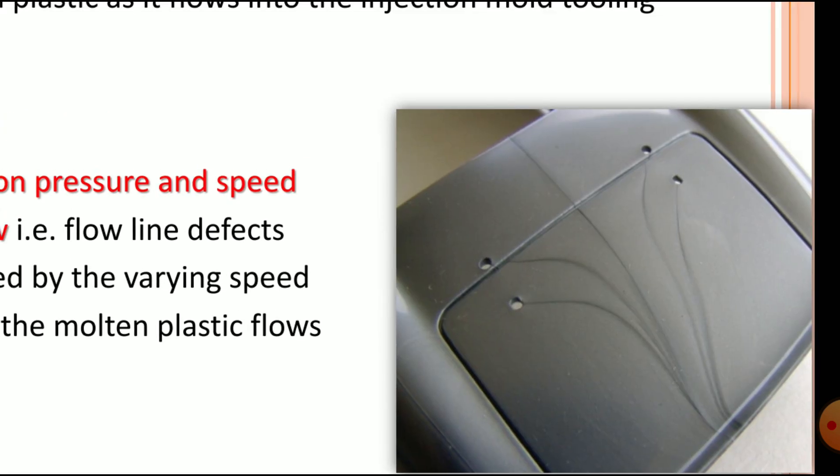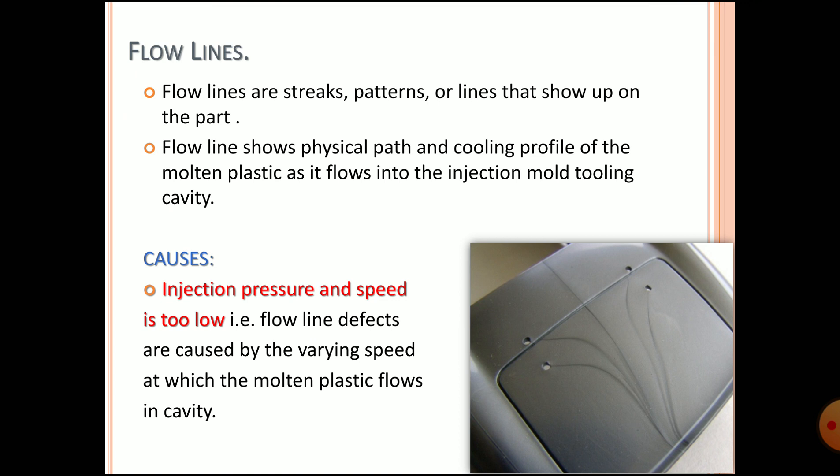After solidification, the partition between two zones can be indicated. The flow line shows the physical path and the cooling profile of the molten plastic as it flows into the injection mold cavity. So why are these defects caused?